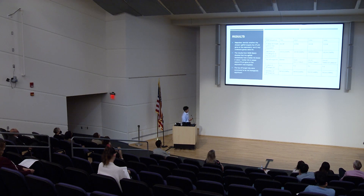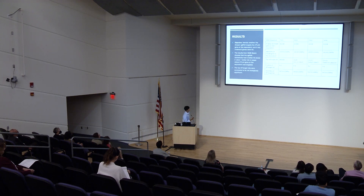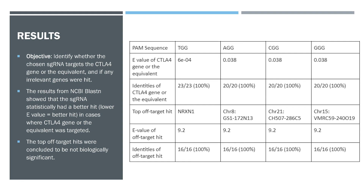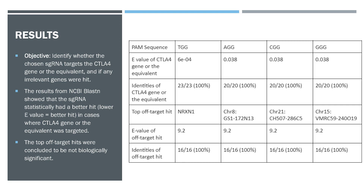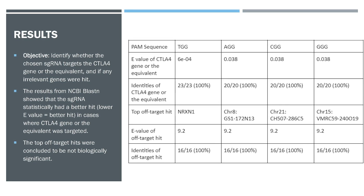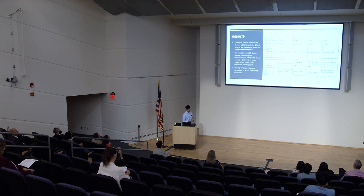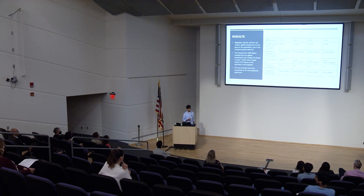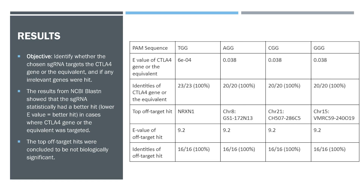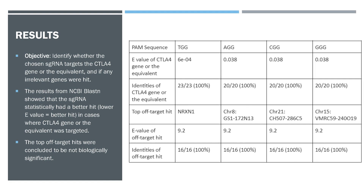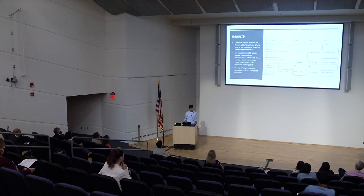Here are the results. The E-values represent how good a hit is — the lower the E-value, the better the hit. The E-value for the CTLA-4 gene hit was very low, indicating a statistically better hit, whereas the E-values for off-target hits were very high in comparison. We also looked at identity scores: off-target identities were significantly lower than when the CTLA-4 gene was hit. We concluded that the sgRNA statistically had a better hit on the CTLA-4 gene, and the top off-target hits were not biologically significant.